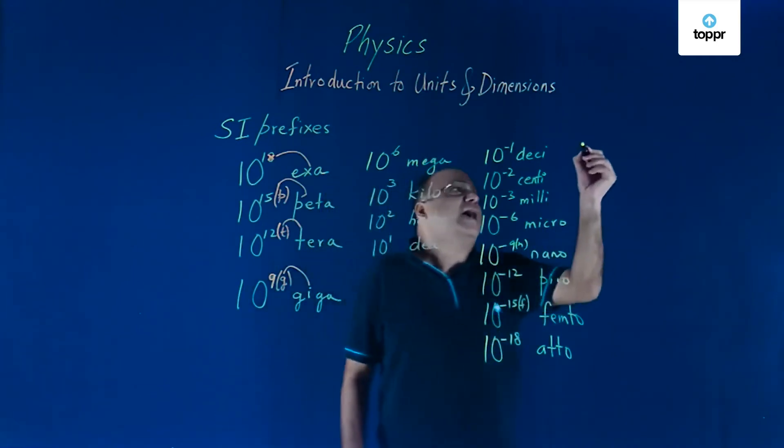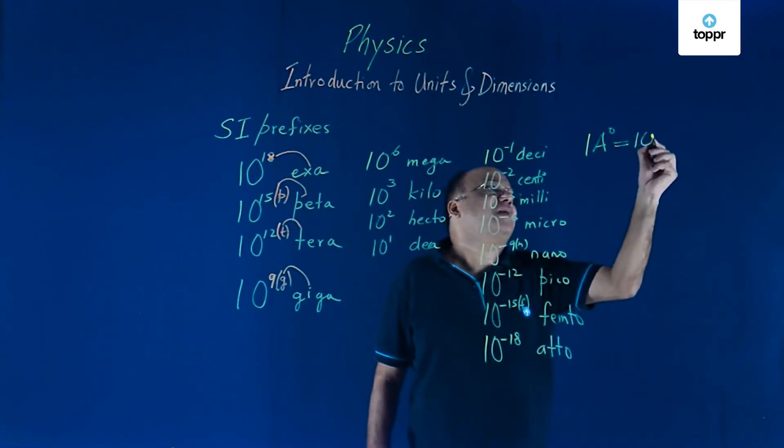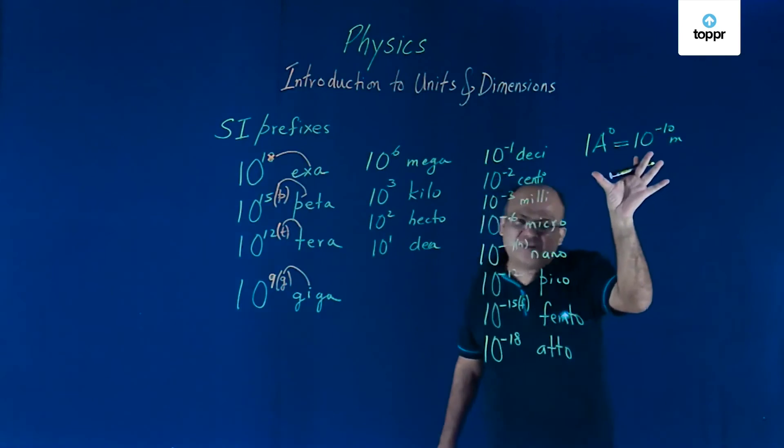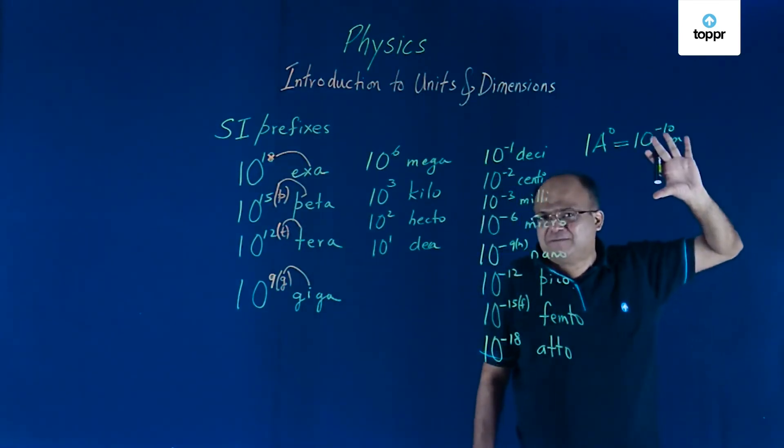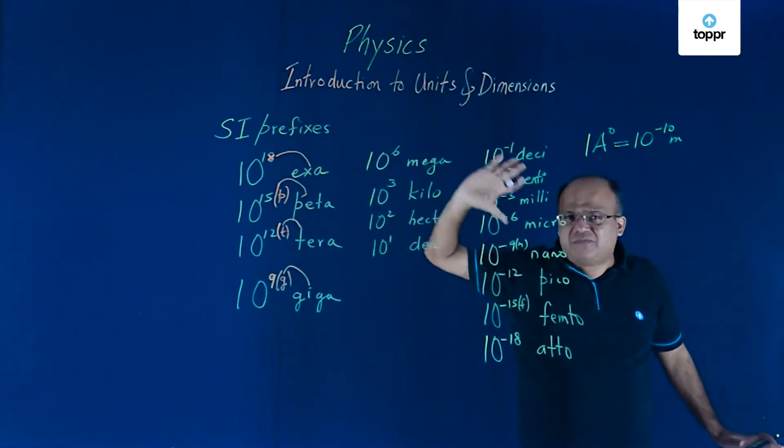Angstrom is not SI. Angstrom is 10 to the power minus 10 metre. Used because convenient to use this sometimes, but is not SI. So these are the SI prefixes.